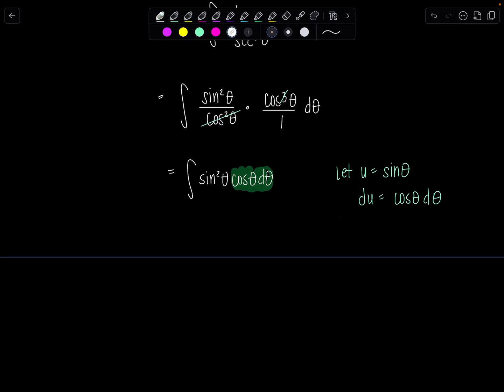And then we can rewrite this integral now in terms of u. So it's going to be u squared du. Boom. Integrating is easy peasy. One third u cubed plus c. And then now back sub. So this is going to be one third sine cubed theta plus c.